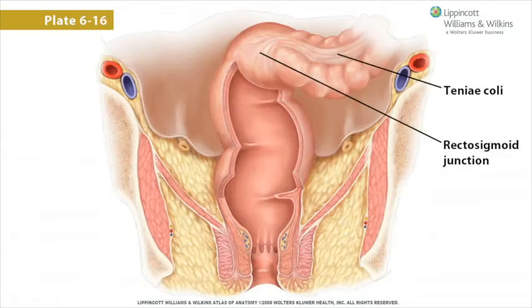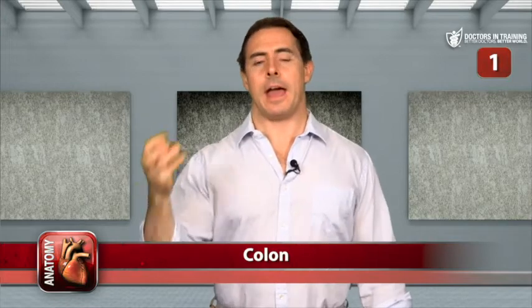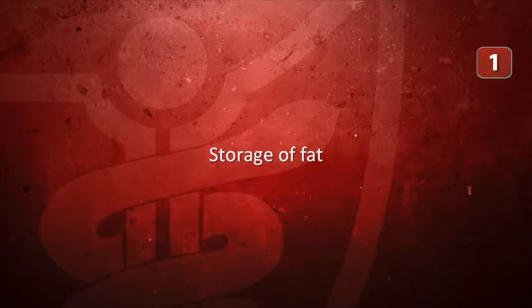The taenia coli merge into a continuous longitudinal muscle layer at the rectosigmoid junction; thus the rectum does not have taenia coli. Omental appendices — small peritoneal sacs filled with fat — hang from the colon along its length but are absent from the rectum. They have no obvious function aside from the storage of fat.